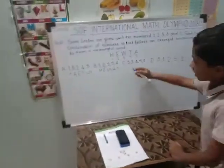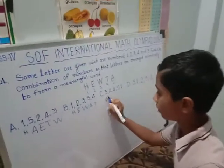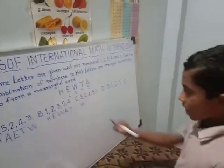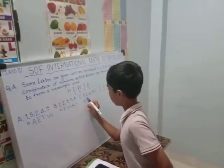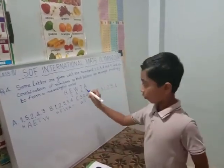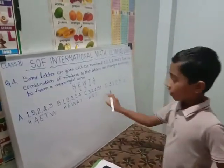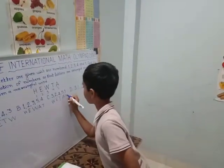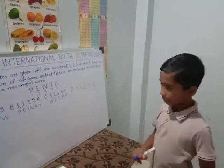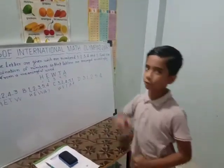Now we will see option C1. The third one is W. Then the second one is E. Fourth word is T. Fifth word is A. And first word is H. It is not a meaningful word.